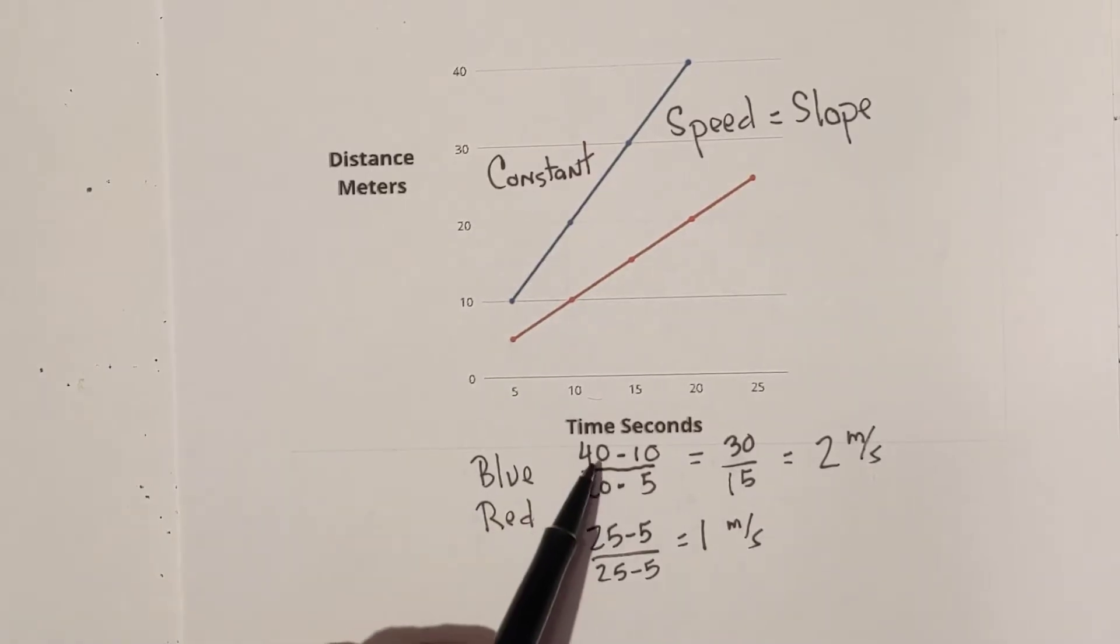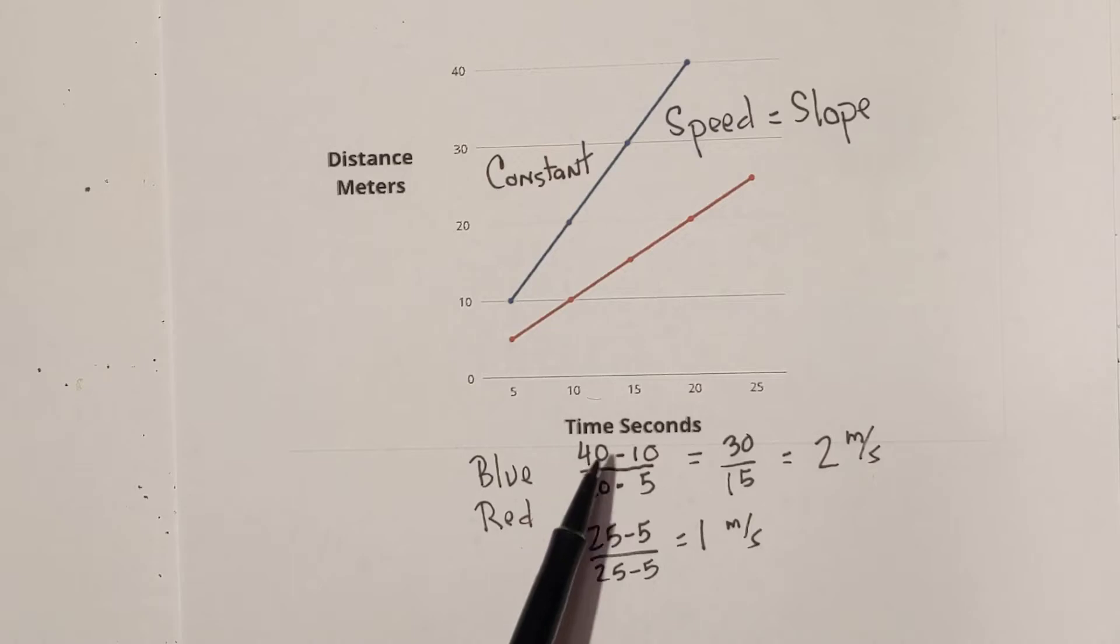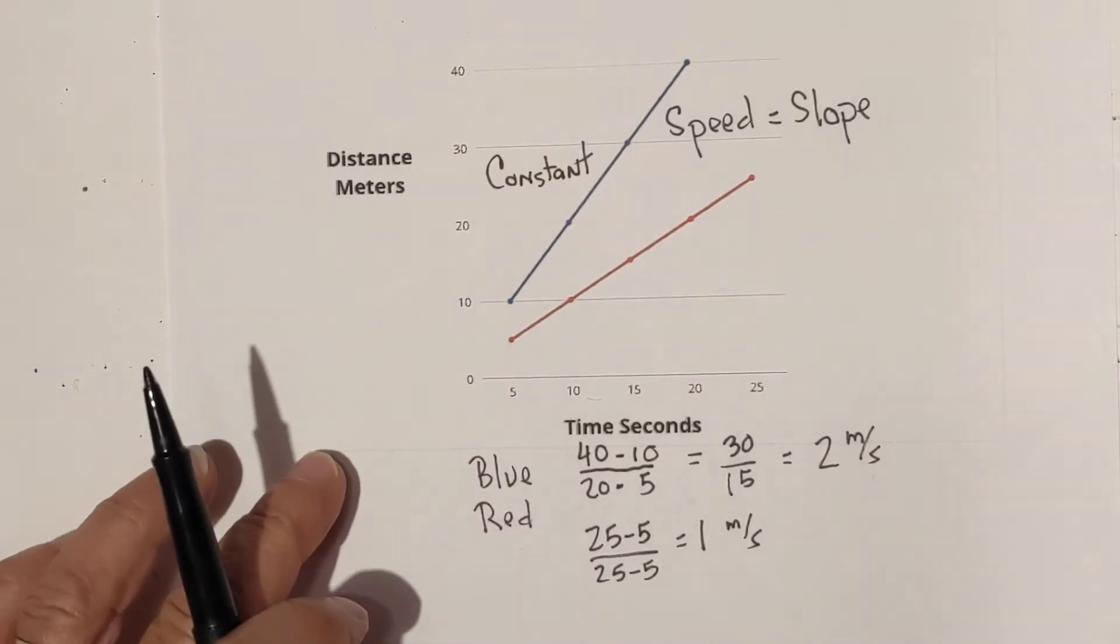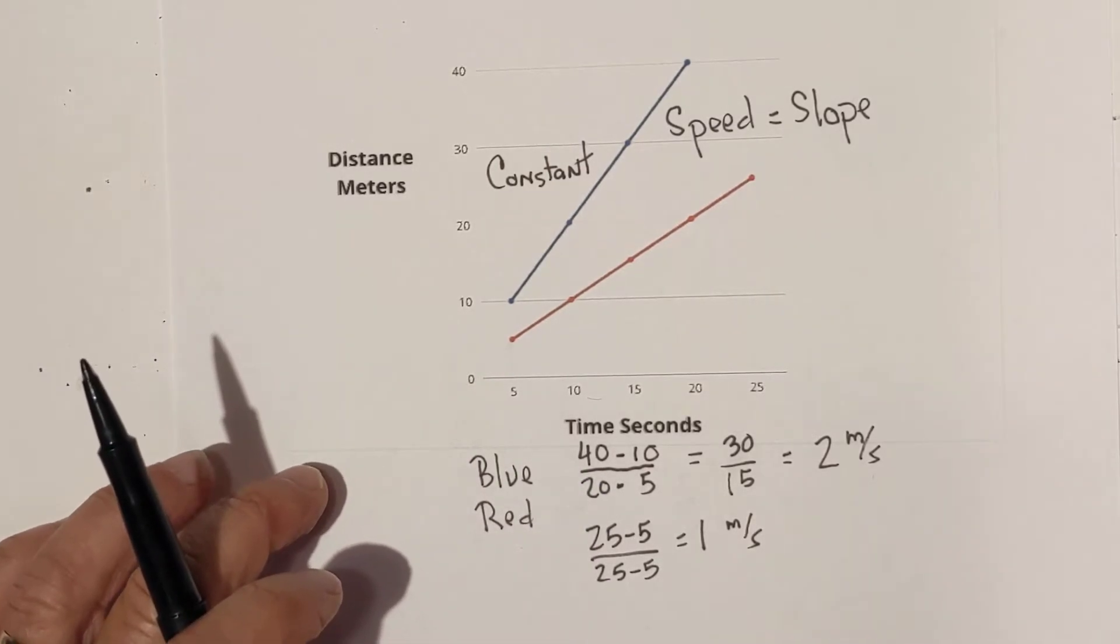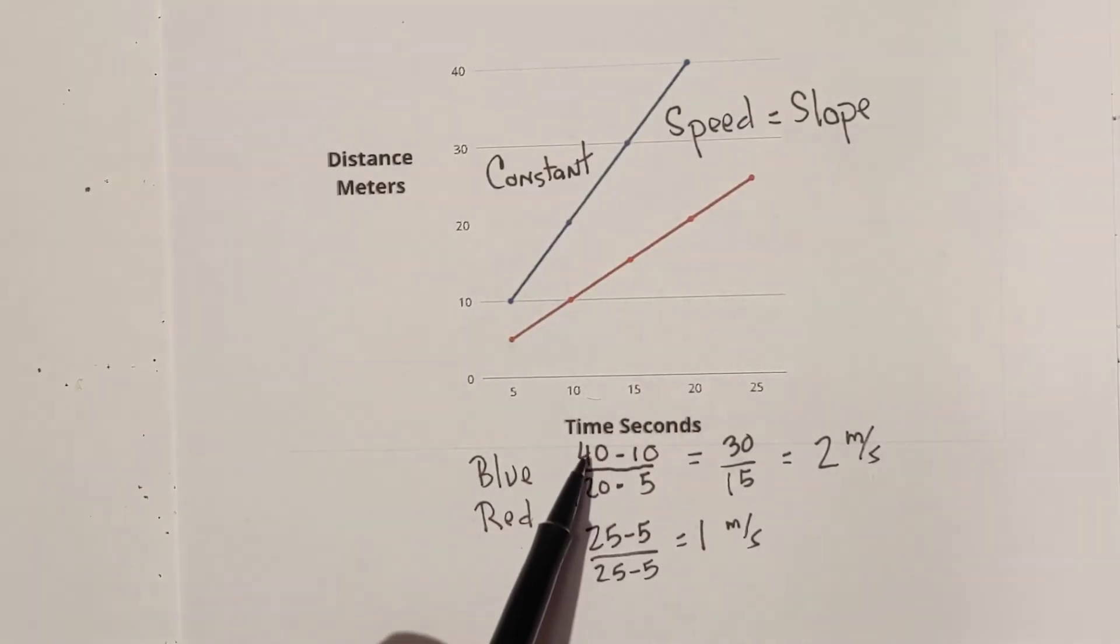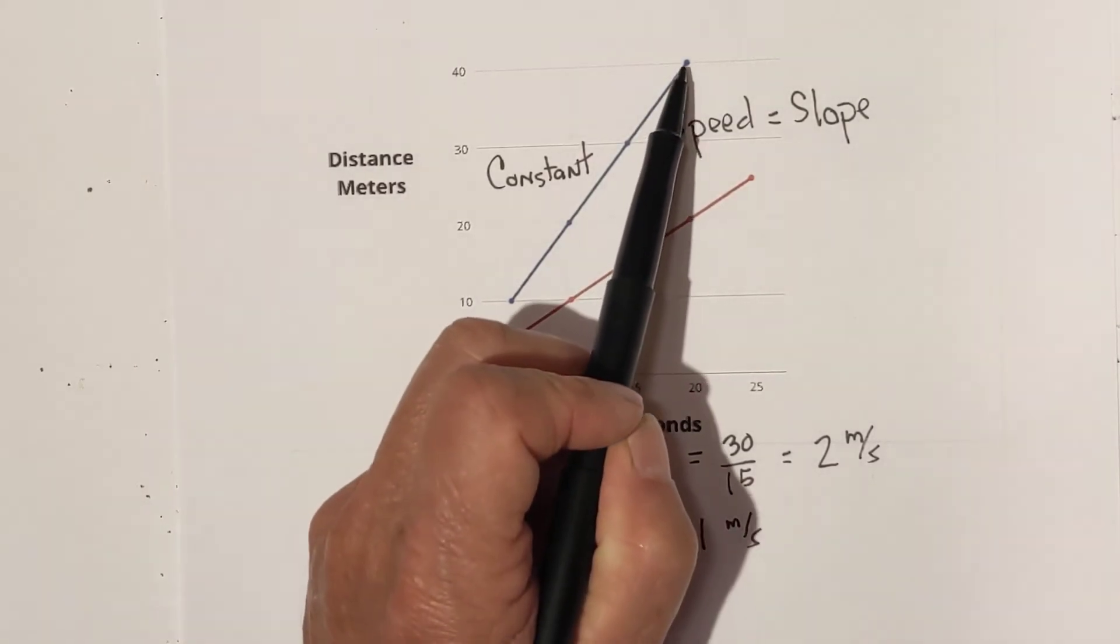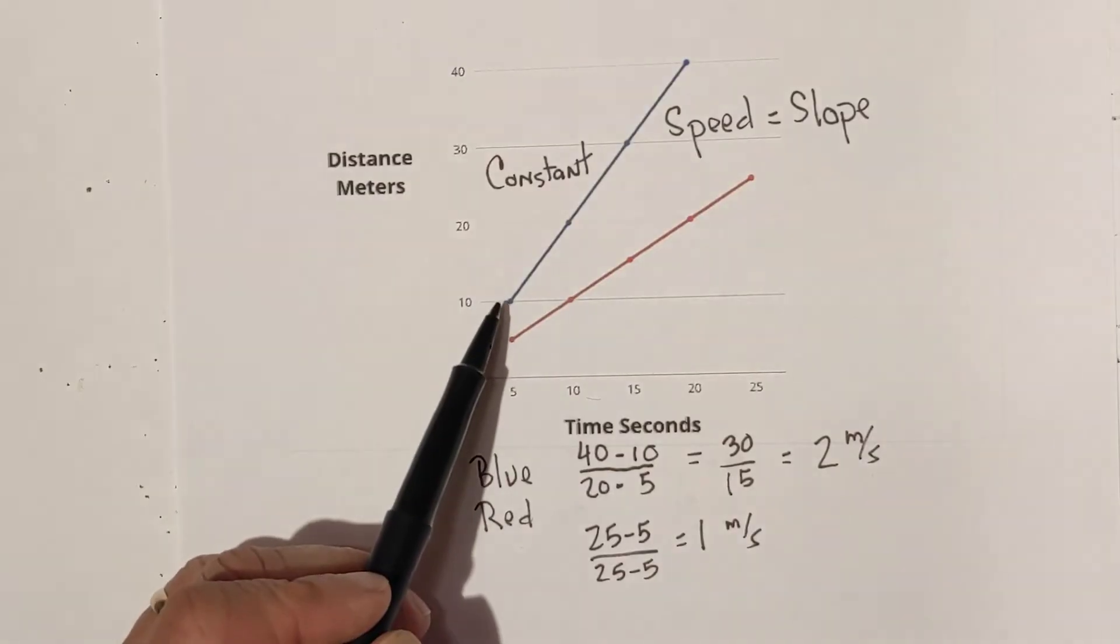Okay, I've already gone ahead and written this out to speed things up, but you know the slope formula is rise over run or y2 minus y1 over x2 minus x1. So, if I look at y2, which is where it ends up, is 40 and it started at 10.